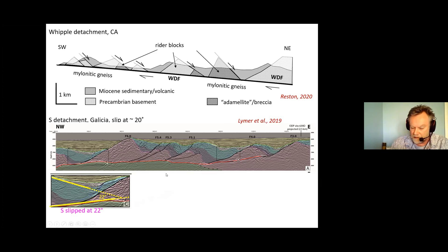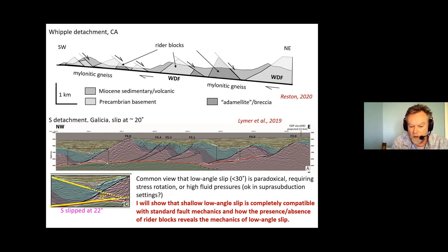We've heard quite often already today that there's this common view that low angle slip at less than 30 degrees is paradoxical requiring stress rotation, high fluid pressures or something else. But I'm going to argue that shallow low angle slip is completely compatible with completely standard fault mechanics and how the presence or absence of rider blocks reveals the mechanics of low angle slip.